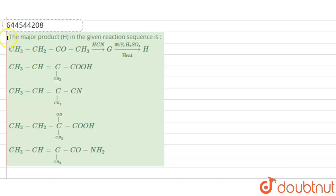Hello everyone, let's start the question. So the question says the major product H in the given reaction sequence is and the starting material or the primary reactant is